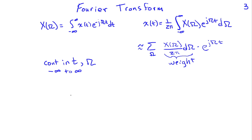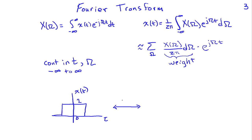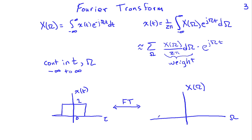We can draw this pictorially. Suppose I have a signal x(t) with some shape. Taking its Fourier transform — by evaluating the integral — gives a frequency-domain representation x(ω). In general this is complex-valued, since we're integrating over complex sinusoids, but drawn as if real for illustration. For example, rectangles in time transform to sinc functions in frequency.